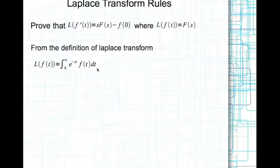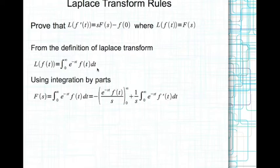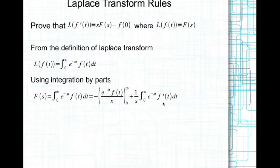Now we want f dash of t — how do we get that? Let's integrate by parts. This is the first expression in the integration by parts, and this is the second expression. We just follow the integration by parts rules. Now if you look at this term here, it looks like the Laplace transform of f dash of t from the definition.